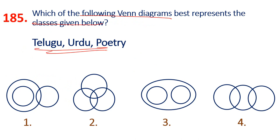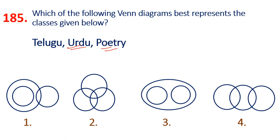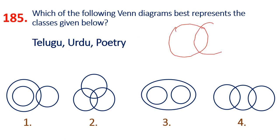Next question: let's represent the Venn diagram. Telugu is a language, Urdu is a language, Poetry is a language. We have poetry in Telugu, poetry in Urdu, poetry in English, and poetry in other languages. Poetry is common in Telugu and Urdu. The answer is option 4.